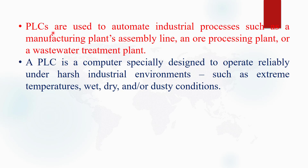PLC is used in automation industries for processes such as manufacturing plants, assembly lines, processing plants, or wastewater treatment plants. A PLC is a computer especially designed to operate reliably under harsh industrial environments such as extreme temperature, wet conditions, dry conditions, or dusty environments.